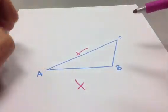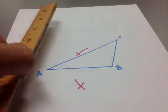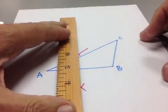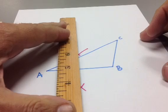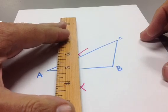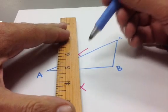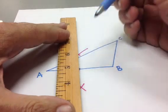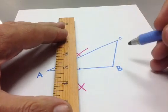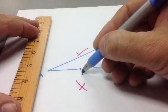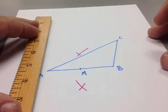And what we've constructed, if we draw this entire line, is the perpendicular bisector of segment AB. However, all we want is the midpoint, so all we have to do is mark the point where this line crosses segment AB, which is what I will call point M. That is our midpoint.